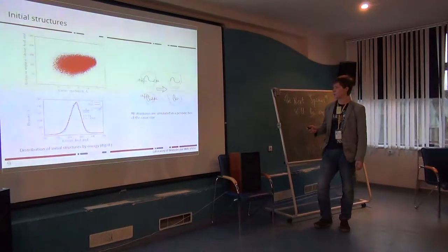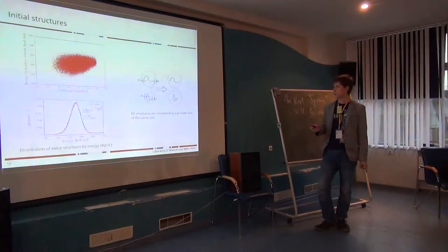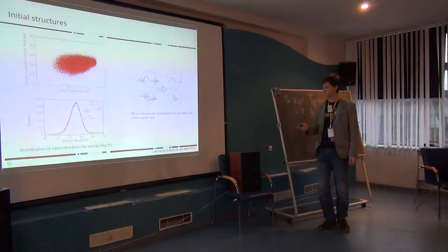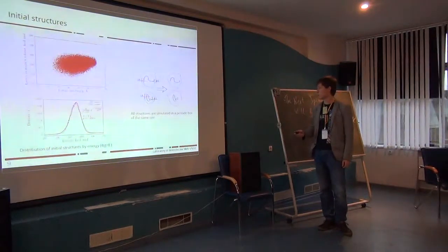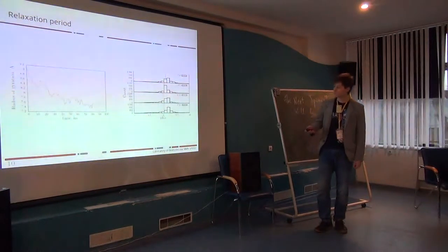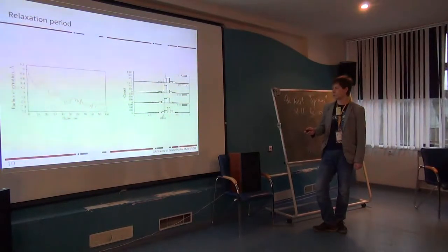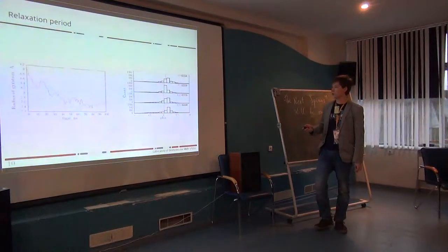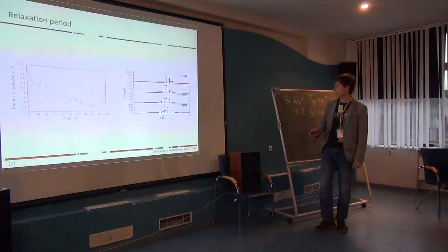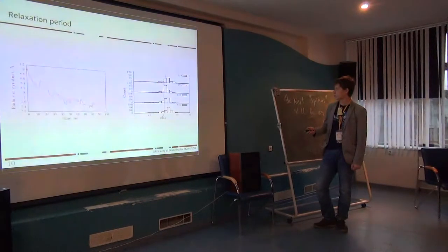We generate a big ensemble of random structures and put them into the same box of the same size, so all compact and elongated structures have the same freedom. We choose 50 structures from that distribution and start our simulations. By the relaxation period, we obtained averaged radius of gyration for 100 nanoseconds, and you can see that it came to the plateau at about 70 nanoseconds. This justifies our choice of 100 nanoseconds for relaxation period.